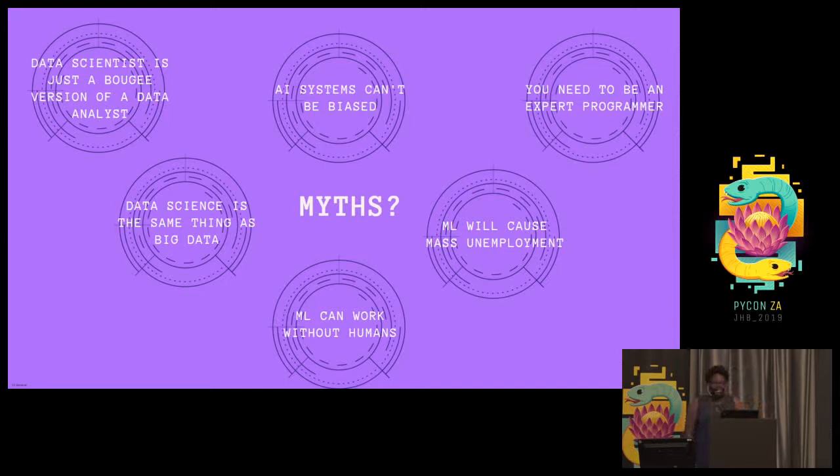One of the top myths: AI systems can't be biased. Yes, they can, because AI systems are being coded by humans and humans are biased. Because of that, obviously, if you have a team that's not exactly diverse, it's going to end up showing up in your code.